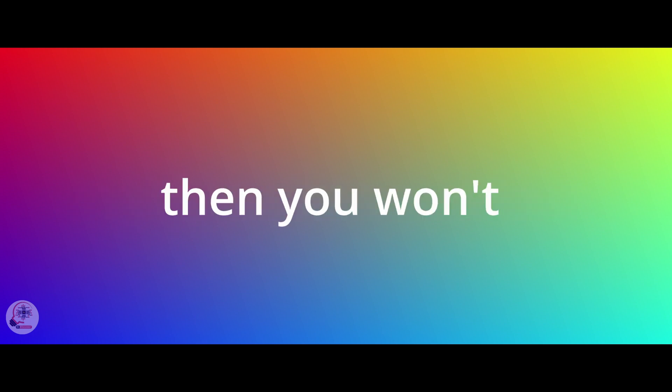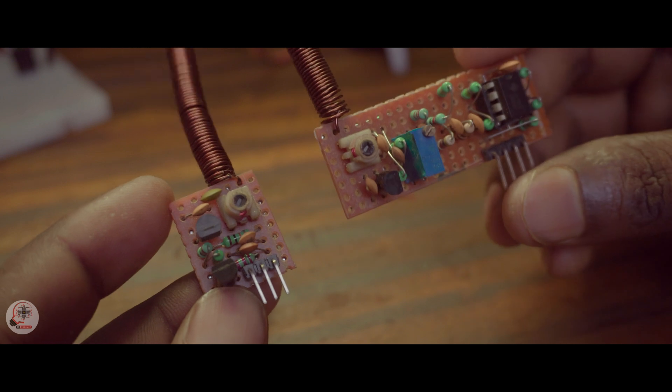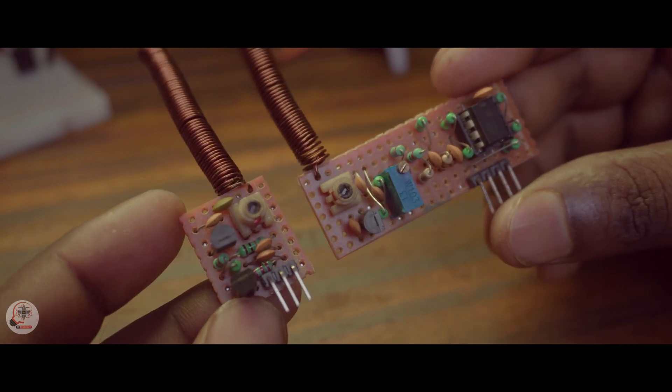If you have not seen my previous video then you would not understand anything in this video, so watch the previous video first. This is a 433 MHz transmitter and receiver module. On the other hand this is a 27 MHz transmitter and receiver module made by me. So let's check this out.